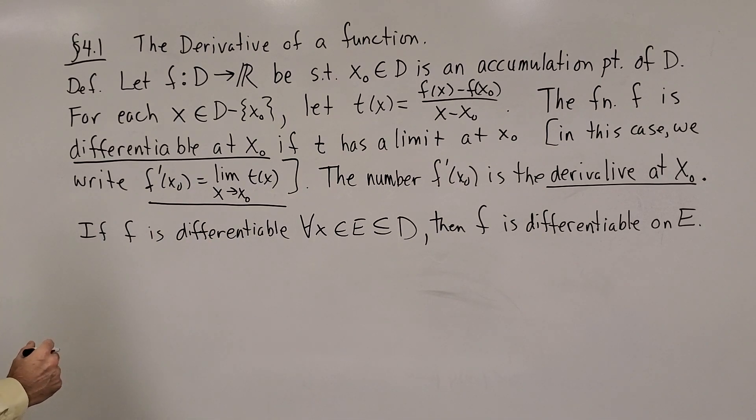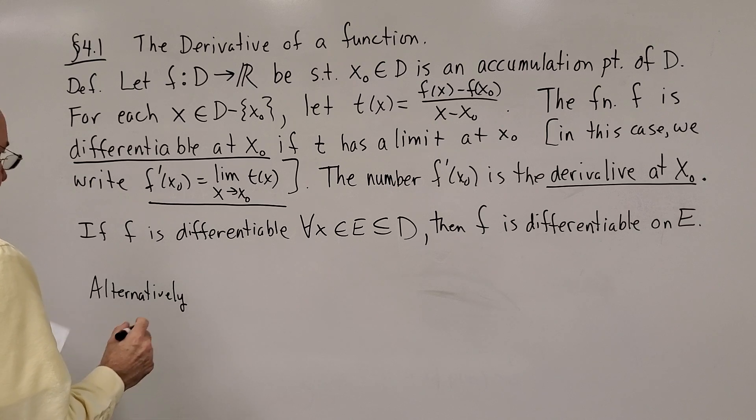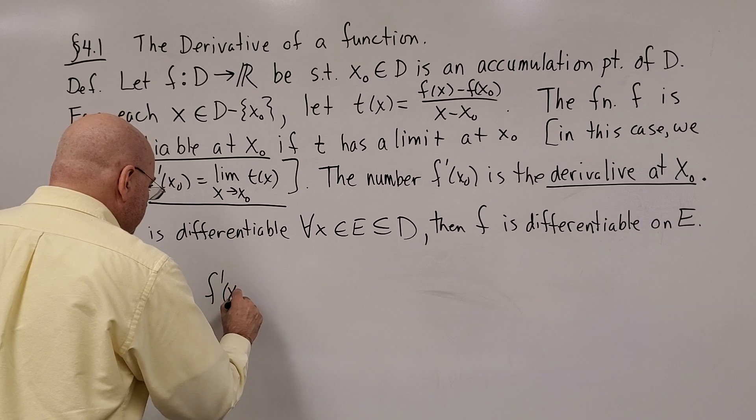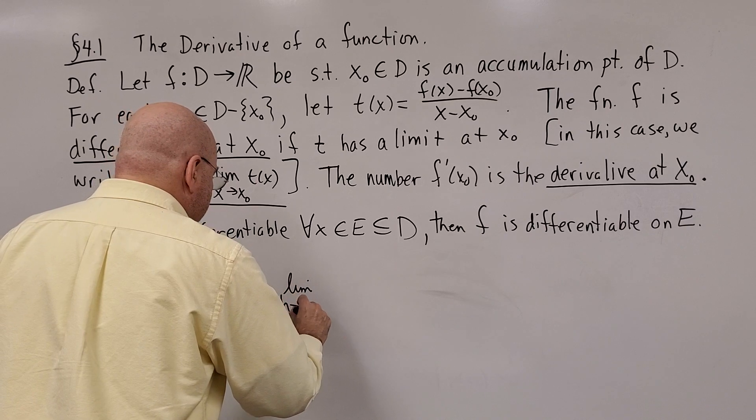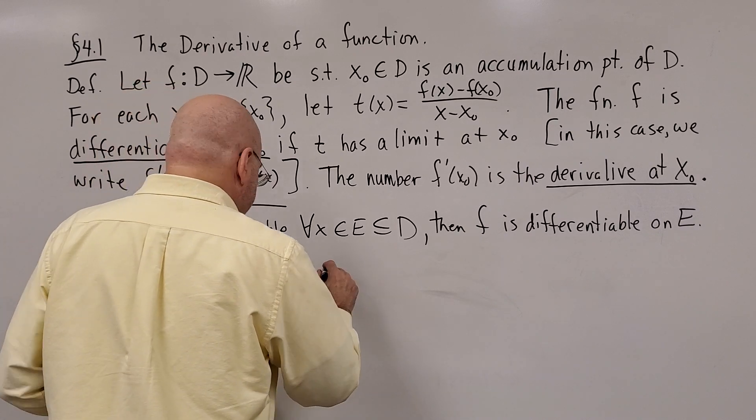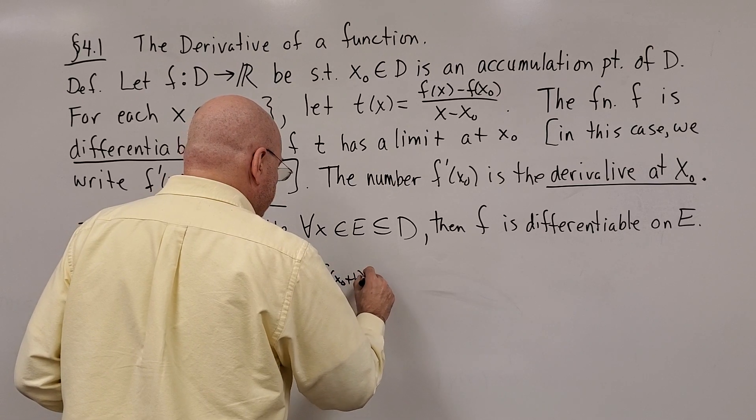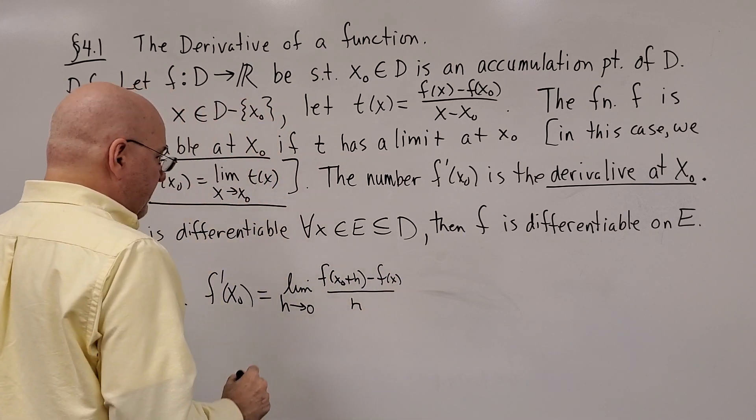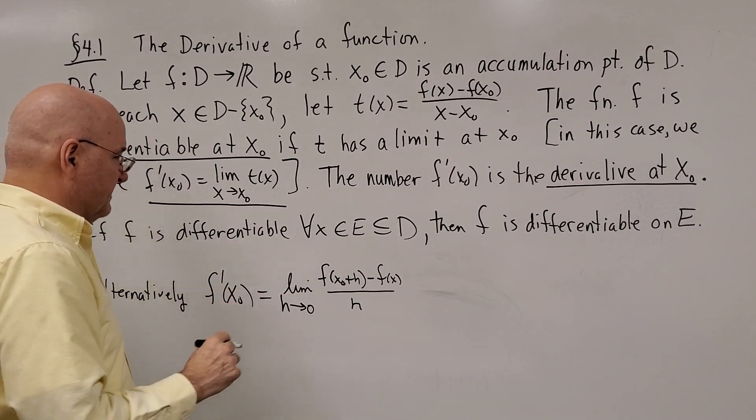There is an alternative definition. Alternatively, you can say that f prime of x zero is equal to the limit as h goes to zero of what we call the difference quotient of f. Now I shouldn't even write this unless that limit exists, so let me put in brackets: if the limit exists.